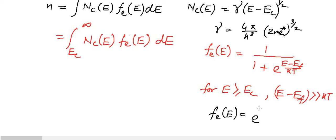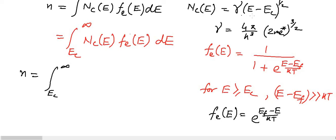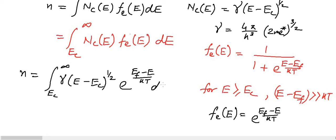So F(E) simplifies to e^((E_F minus E) / kT). With this value of F(E), N becomes the integral from E_C to infinity of gamma times (E minus E_C)^(1/2) times e^((E_F minus E) / kT) dE.